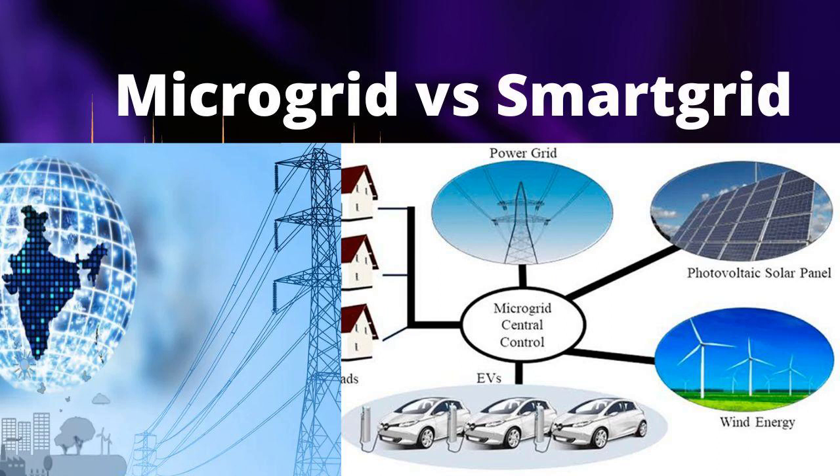Components. Microgrid: a typical microgrid includes DERs, energy storage systems, controllers, and local loads. It may have the ability to connect and disconnect from the main grid as needed. Smart Grid: the smart grid involves a broad array of components and technologies, including advanced metering infrastructure (AMI), sensors, communication networks, grid management software, automated switches, and various monitoring and control devices.